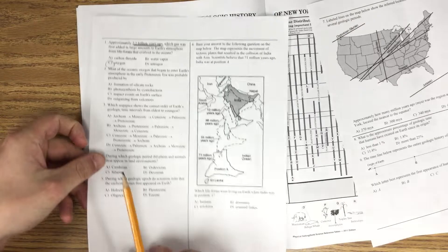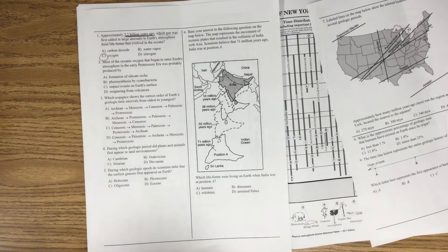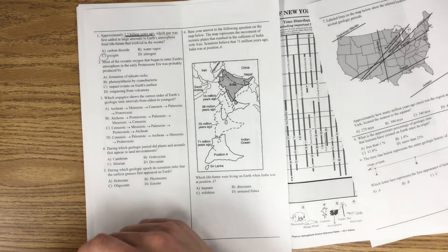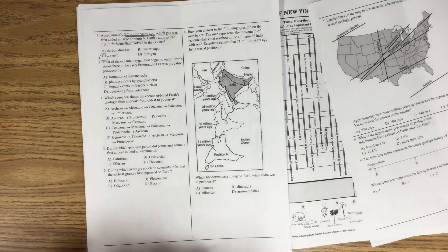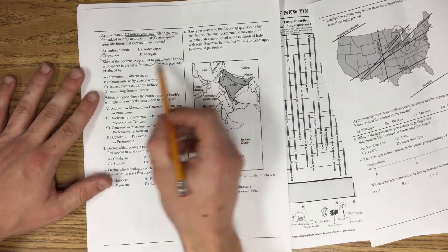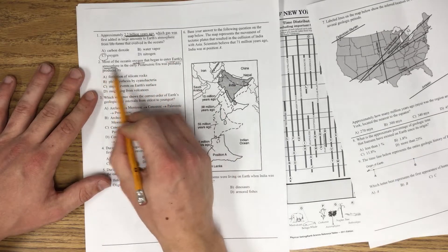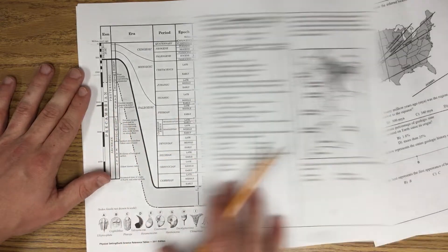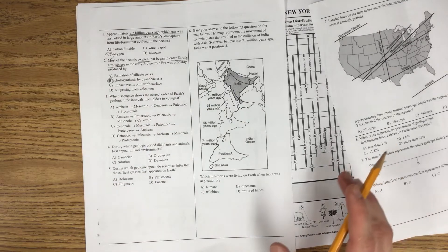Question 2. Most of the oceanic oxygen that began to enter Earth's atmosphere in the early Proterozoic was probably produced by, and this goes back to living environment. You have to know that plant photosynthesis is what causes oxygen to be in the atmosphere. So anytime you see oxygen that enters Earth's atmosphere, think photosynthesis, and also remember that you've got the answer right here for when it occurred. So this is going to be photosynthesis of cyanobacteria.